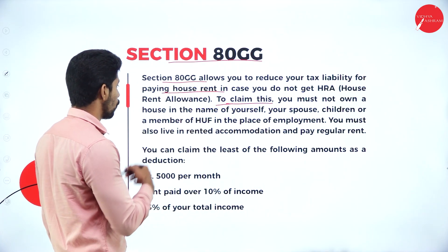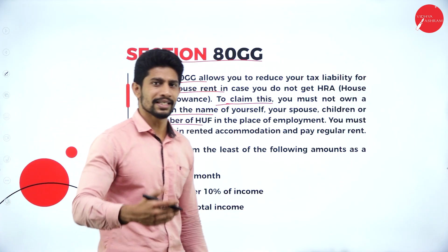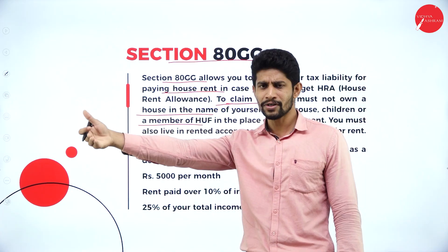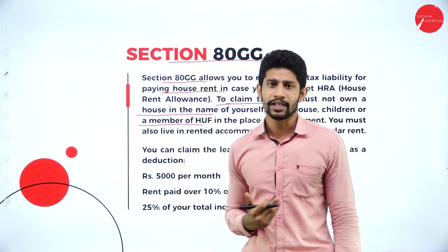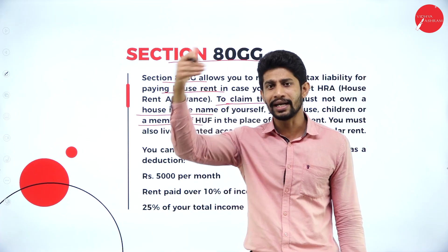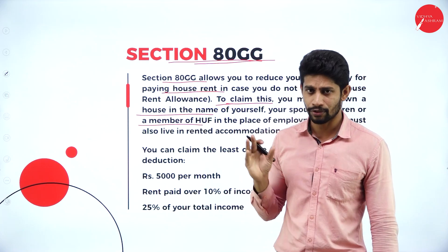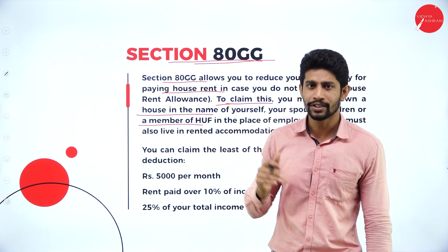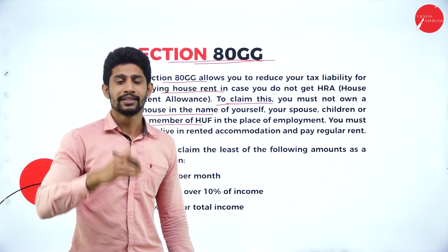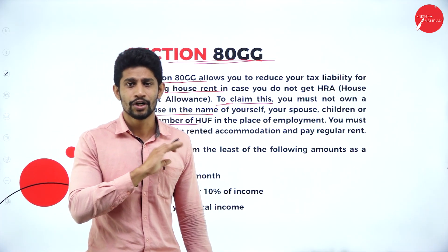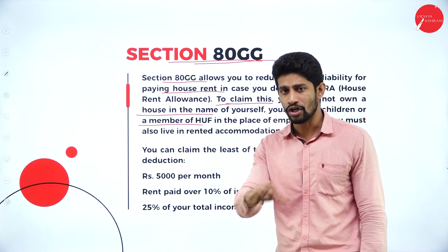To claim this deduction, you must not own a house in the name of yourself, your spouse, children, or HUF member in the place of employment. For example, if you are in Mysore and go to Bangalore for a job, and you don't have your own house in Bangalore and your employer is not providing HRA but you are living in a rented house, you can claim the rent paid as a deduction under Section 80GG. However, if you are working in Mysore and you let out your own property there while staying in a rented house and claiming 80GG, the deduction is not allowed — because in the place where you work, if you own a house in your own, spouse's, or children's name, Section 80GG is not applicable.